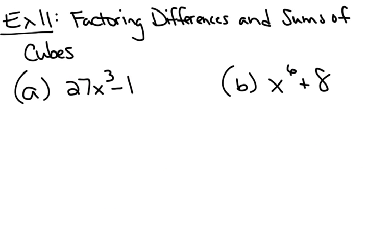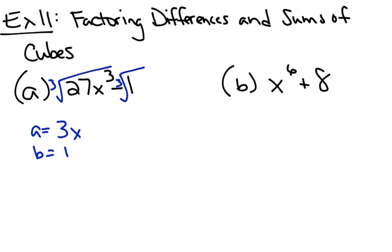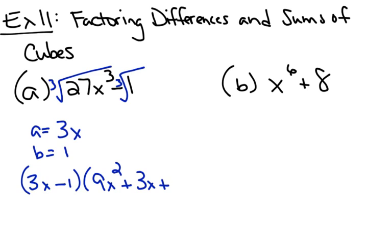Now let's look at factoring differences and sums of cubes. 27x cubed minus 1 is a difference of two cubes. The cube root of the first term is 3x, because 27 is 3 times 3 times 3. The cube root of the second term is 1. So in factored form it's a minus b, a squared plus ab plus b squared — that is, 3x minus 1, times 9x squared plus 3x plus 1.